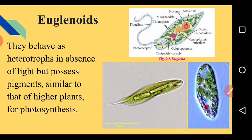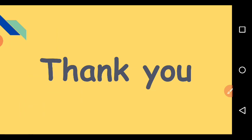To summarize, we have covered all five groups of Kingdom Protista: plant-like protists, animal-like protists, dinoflagellates, fungi-like protists, and euglenoids. Kingdom Protista is now complete. Make a note of each and every important point from this lecture. Thank you.